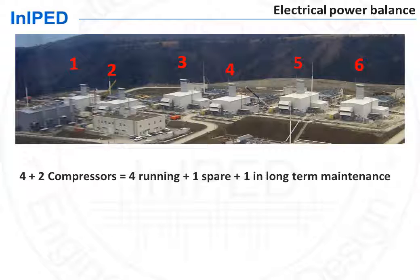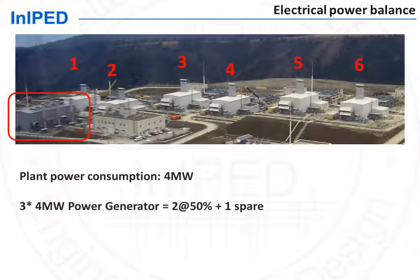Therefore, at this point in time, five compressors will be running. So five times the consumption of one compressor is the maximum power consumption of the plant.